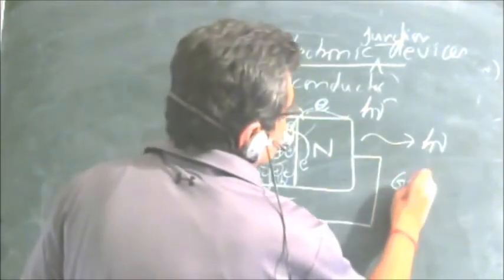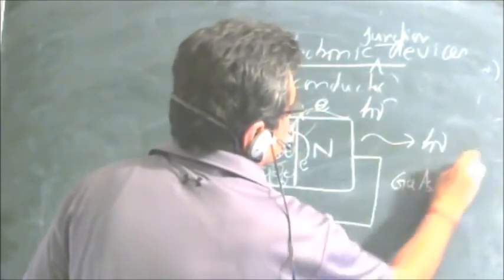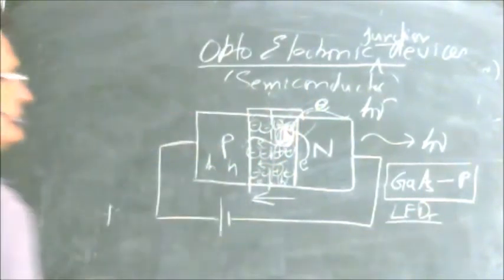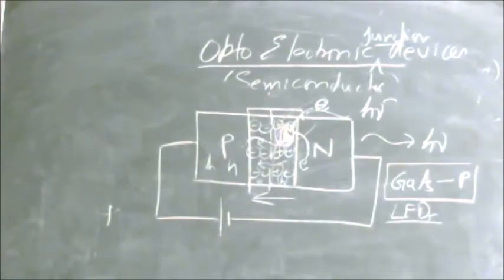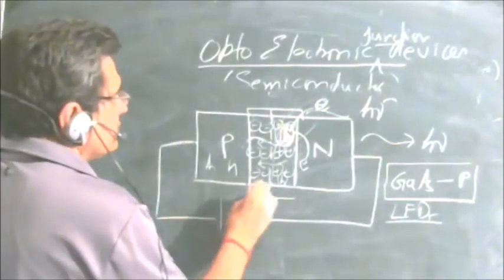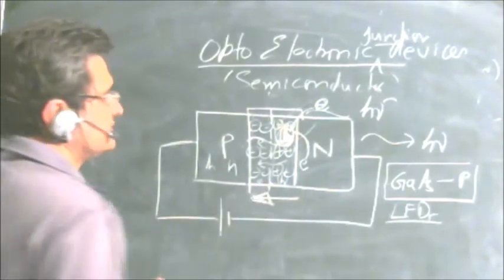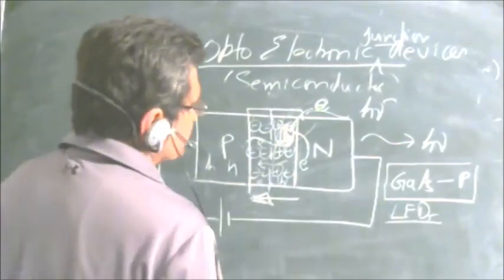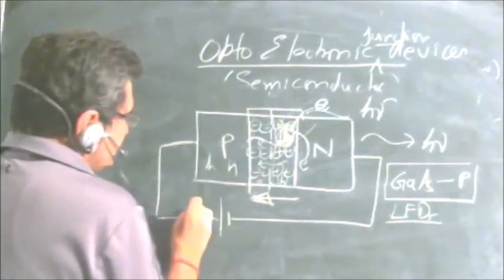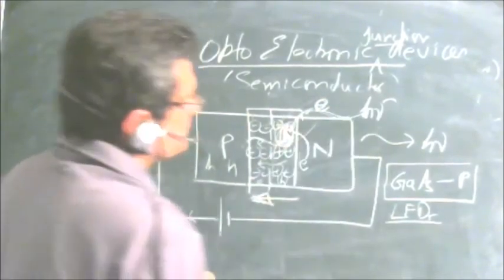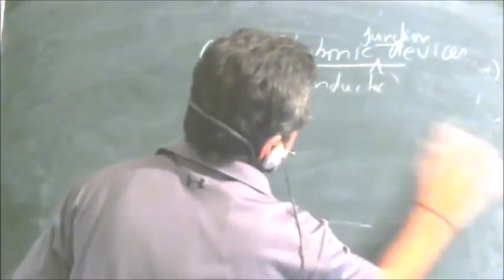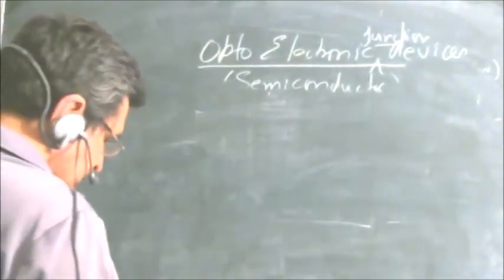Generally, we use gallium arsenide and phosphide for light-emitting diodes, and you can also make infrared LEDs by suitably choosing the energy level. One precaution: LEDs have a low reverse breakdown voltage, so if a reverse bias voltage greater than the rated value is applied, it gets damaged. Also, with increasing current, more light intensity is generated up to a point, but beyond that point it starts reducing.